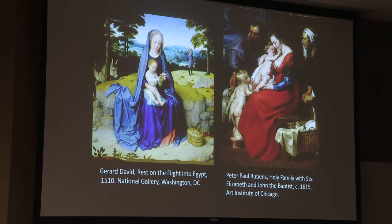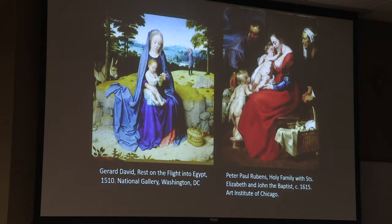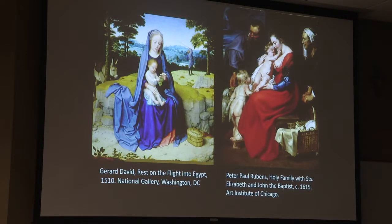Joseph is knocking chestnuts down from a tree — derived from an apocryphal legend where the palm tree on the flight into Egypt bent forward to drop dates for the Holy Family. This shows Joseph's significant role as nurturer and provider and protector of the Holy Family. The donkey in the background — the means of transportation — also reminds us of how Jesus enters Jerusalem on Palm Sunday.